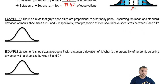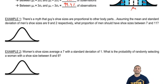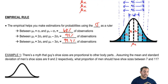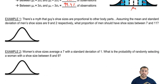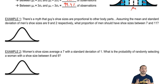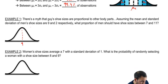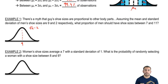Let's apply the empirical rule to some examples. There's a myth that guys' shoe sizes are proportional to other body parts — use your imagination. Assuming the mean and standard deviation of men's shoe sizes are 9 and 2 respectively, what proportion of men should have shoe sizes between 7 and 11? I'll draw a normal distribution and label the mean as 9 and standard deviation as 2.